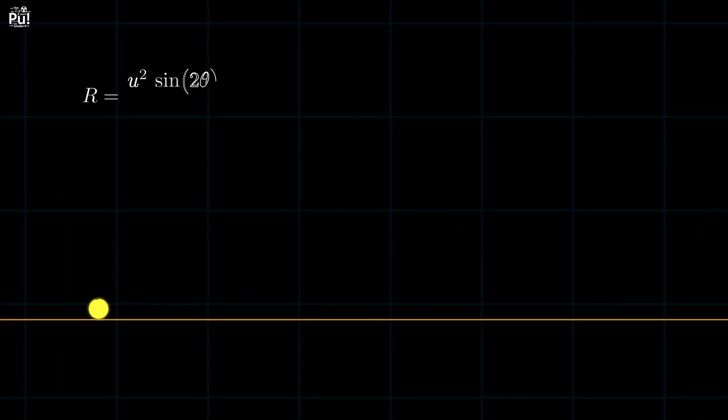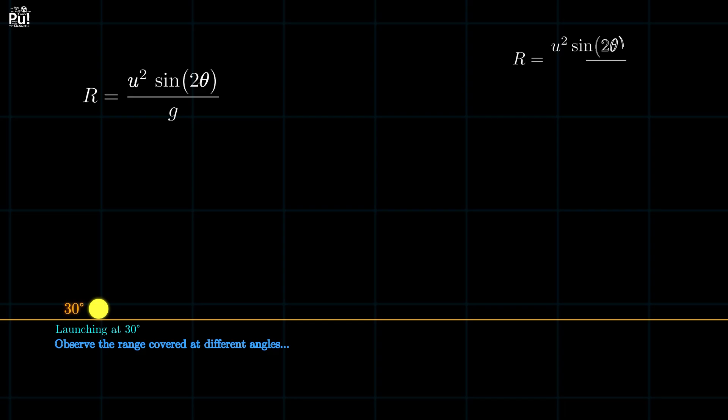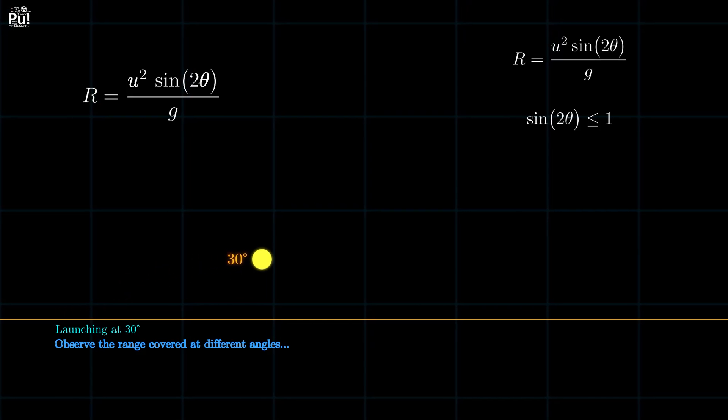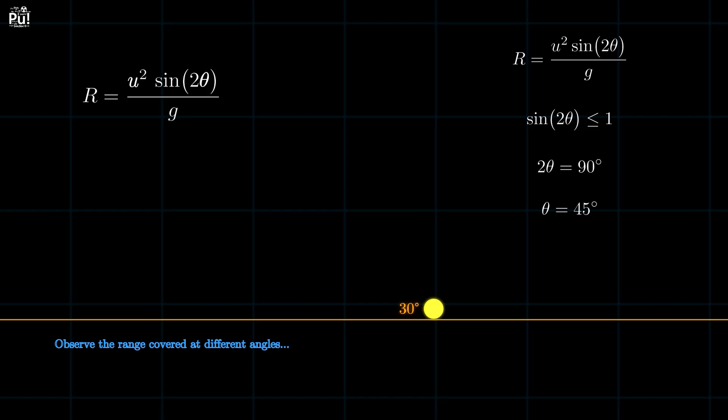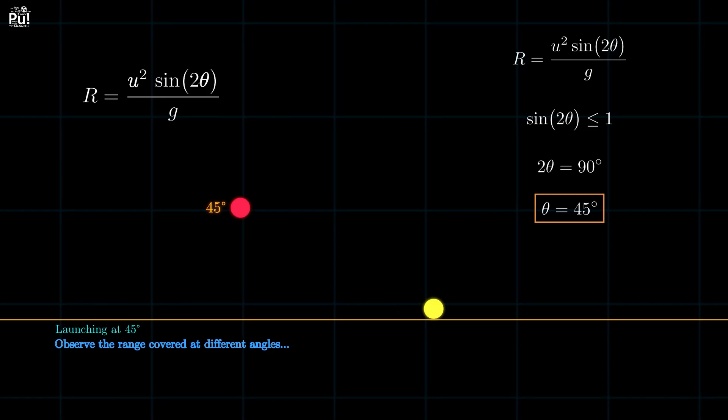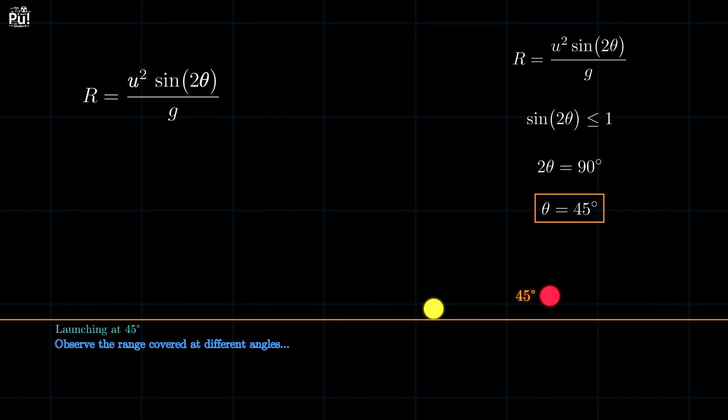That's the standard formula for range in projectile motion. And notice the range depends on both the speed and the angle. Maximum range happens when sine of 2 theta is 1, which means 2 theta is 90 degrees or theta is 45. That's why a 45 degree launch gives the farthest reach.